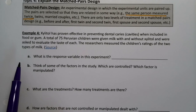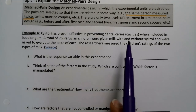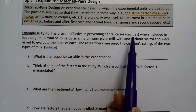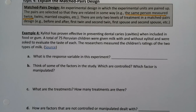Let's look at an example. Xylitol has proven effective in preventing dental caries — i.e., cavities — when included in food or gum. A total of 75 Peruvian children were given milk with and without xylitol and were asked to evaluate the taste of each. The researchers measured the children's ratings of the two types of milk.